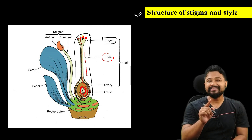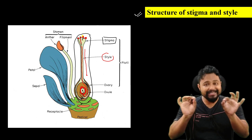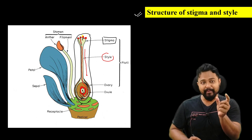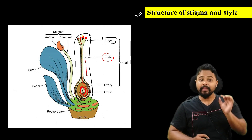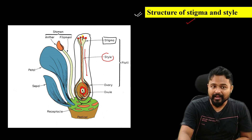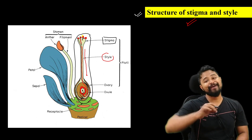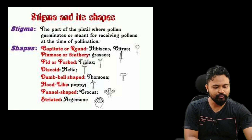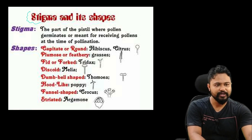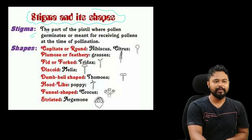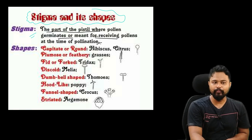So what we have to discuss now is stigma and style basic structure, and stigma and its shapes. Stigma is the part of the pistil where pollen germinates, or is meant for receiving pollen at the time of pollination.